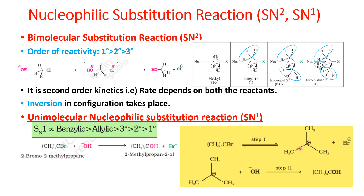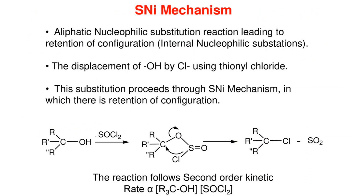In SN1, step 1 (the slow step) involves formation of a carbocation ion. Then in step 2, the nucleophile attacks the carbocation. SN1 can result in both retention and inversion of configuration — leading to a racemic product. For example, OH replaces Cl with retention possible.